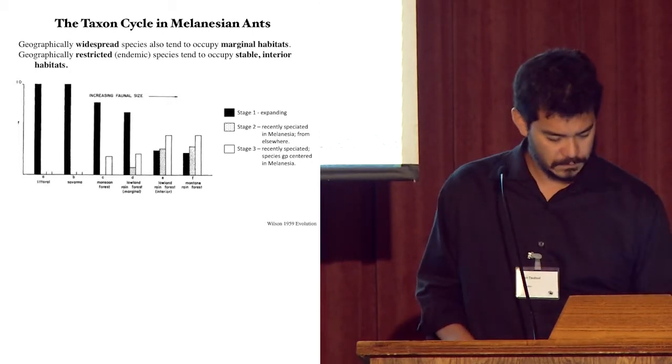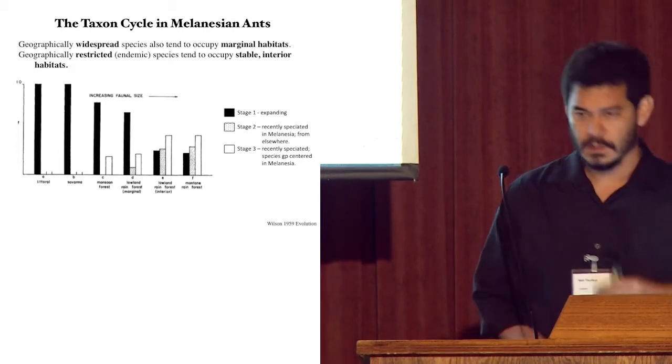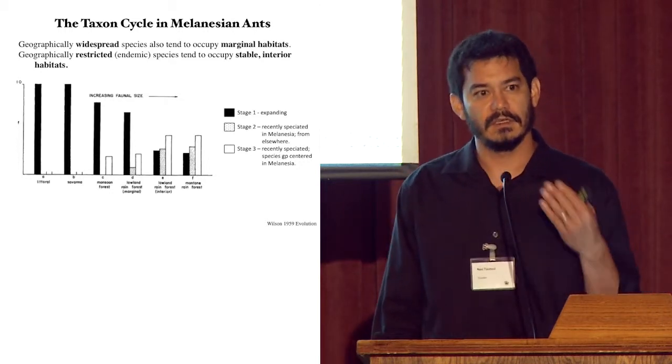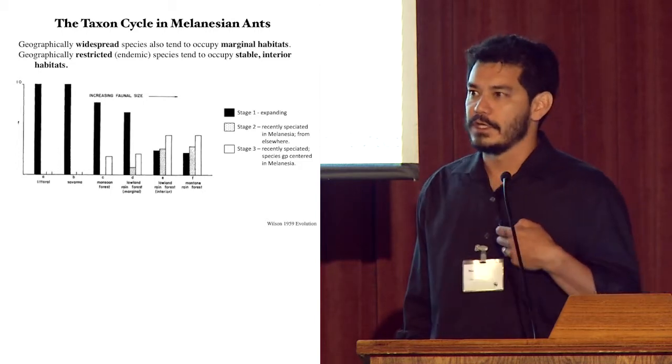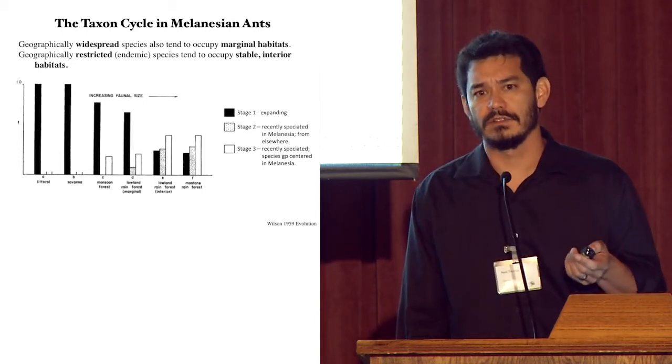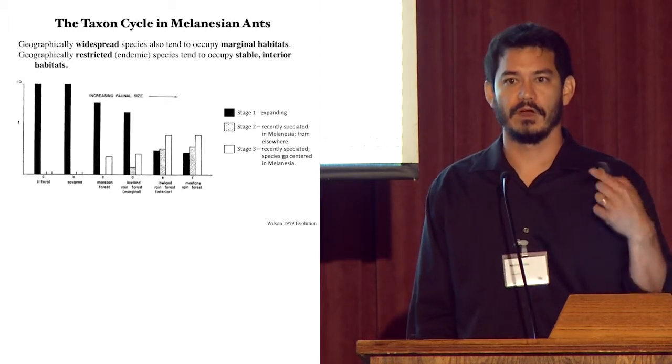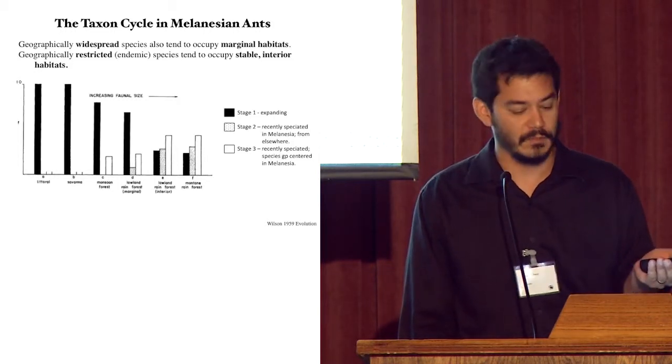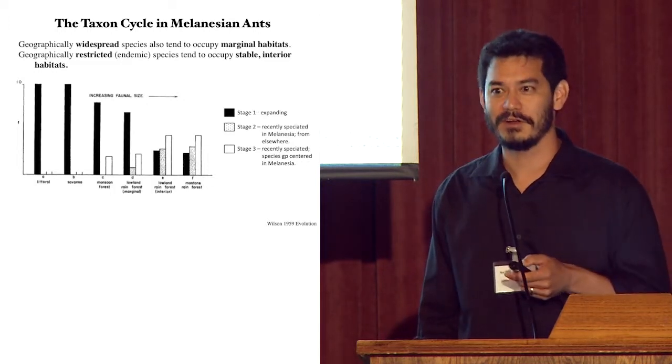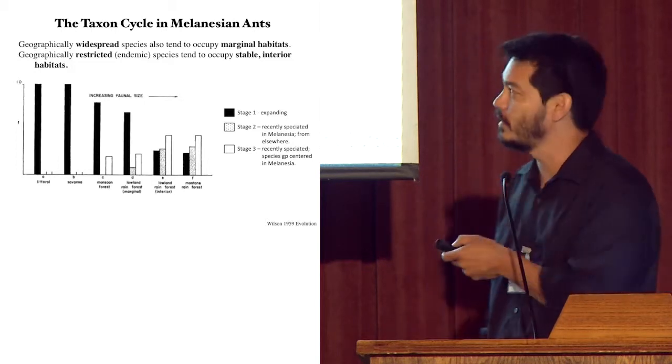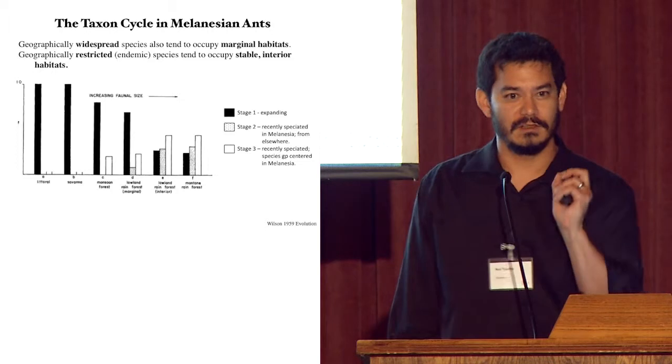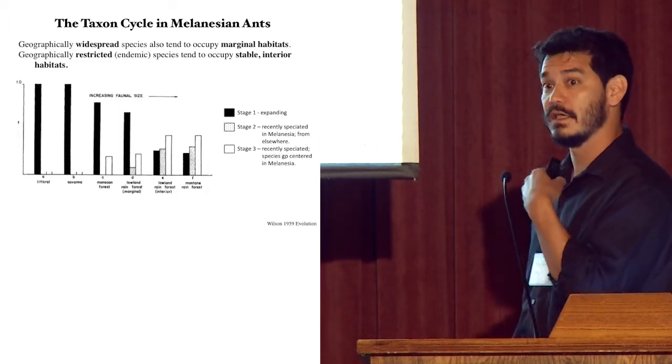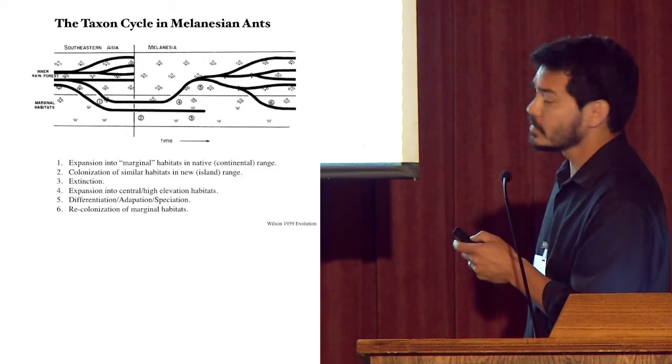And so this pattern led Wilson to develop just a couple years prior to the publication of Baker and Stebbins, this idea of what he called the taxon cycle. And this is a deterministic model to explain how ant species communities are assembled in islands, but applies to a variety of different habitats as well. In the years since this, this model has been largely supplanted by a subsequent model, Ed Wilson and MacArthur developed, of course, the equilibrium theory of island biogeography. But I think that there are still some worthwhile gems in this more deterministic perspective of how species can colonize new habitats, and what happens to them after they do that.